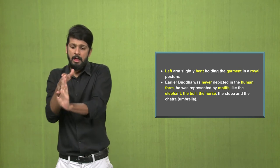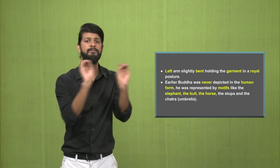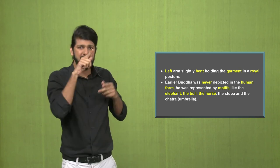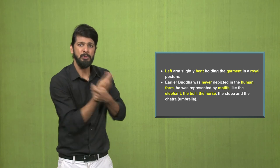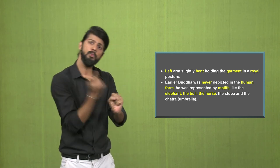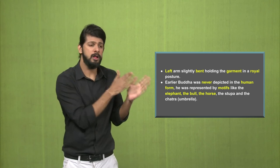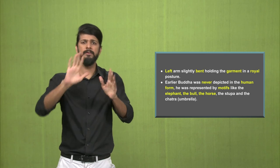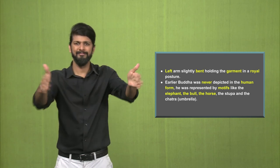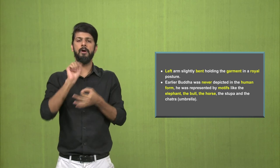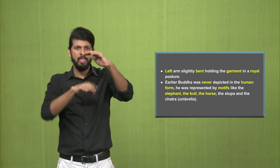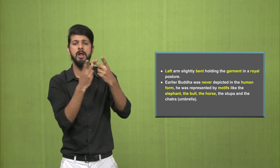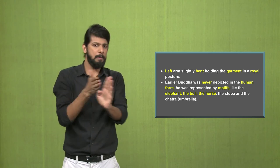Before this standing Buddha, the human form of Buddha was never depicted in sculpture. He was represented more by elephant, bull, and horse motifs. There were also stupas built which symbolized Buddha and were used for religious purposes, along with umbrellas or chhatras as forms of depiction. But before the standing Buddha, there was no human depiction of Buddha in sculpture form.